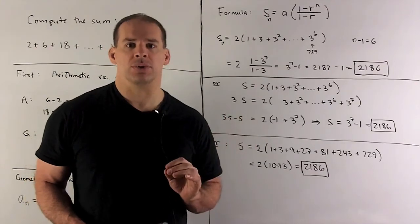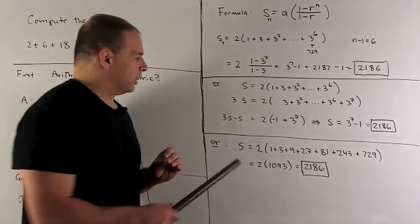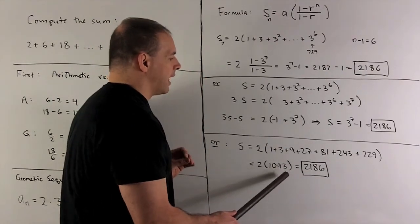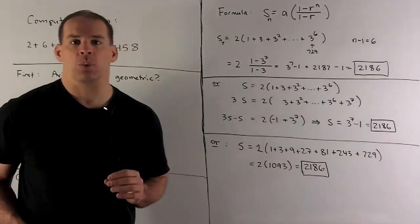Then we note, if we just work it out, I get 2 times 1,093, and then that gives me again my 2,186.